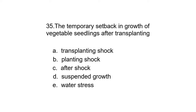Question 35. The temporary setback in growth of vegetable seedlings after transplanting. A. Transplanting shock, B. Planting shock, C. Aftershock, D. Suspended growth, or E. Water stress. The correct answer is Transplanting shock.